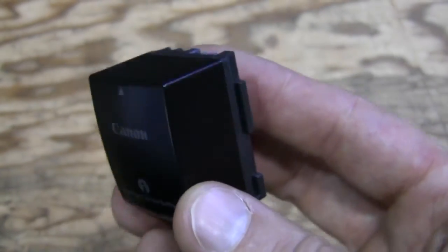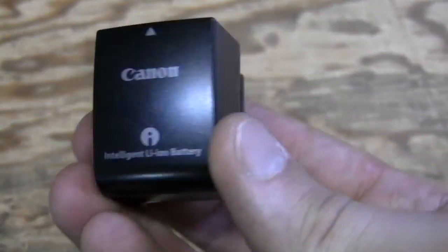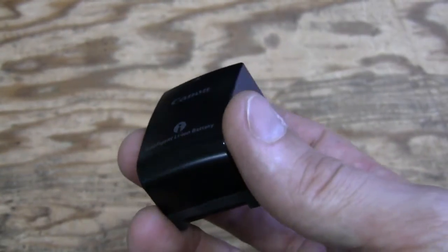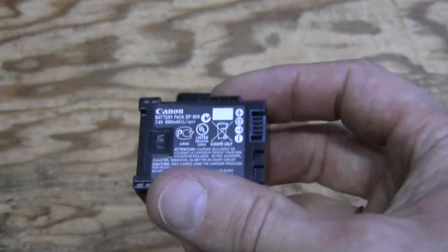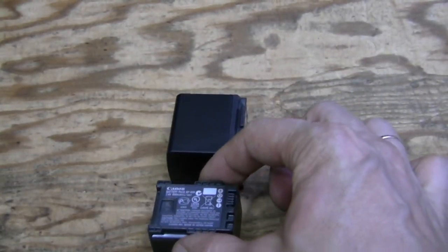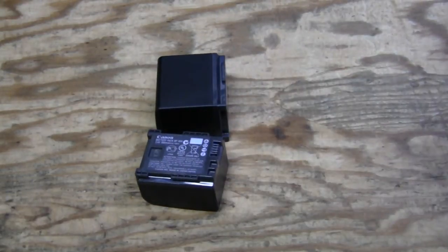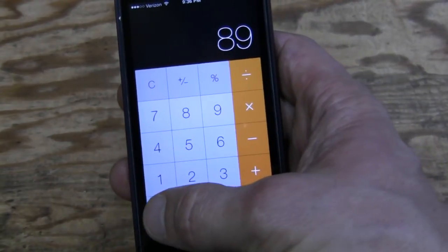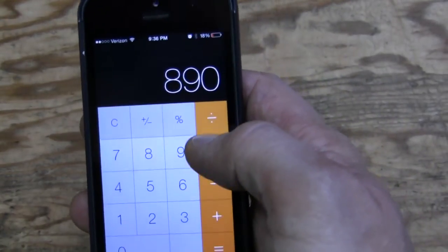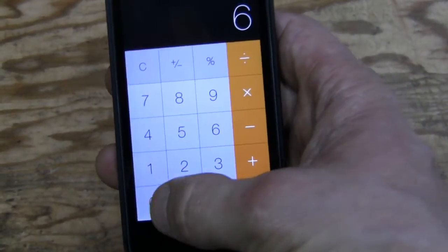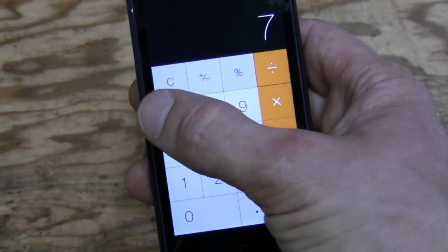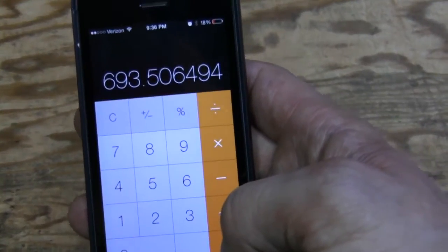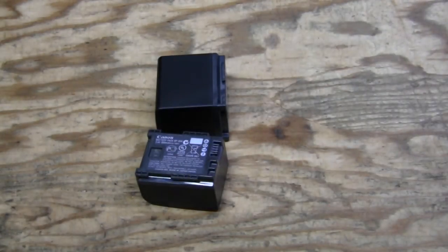So when fully charged, this guy shows 77 minutes, from which I want to calculate how much current the camera draws. So here it is. If we assume this 890 mAh is correct, then we multiply it by 60 minutes and then divide by 77. So this gives us roughly 700 mA. So the camera consumes about 700 mA.